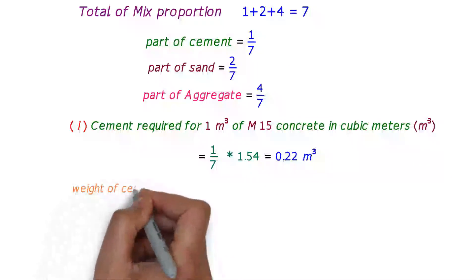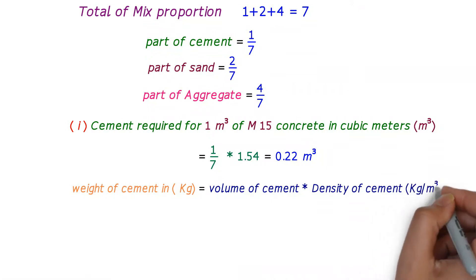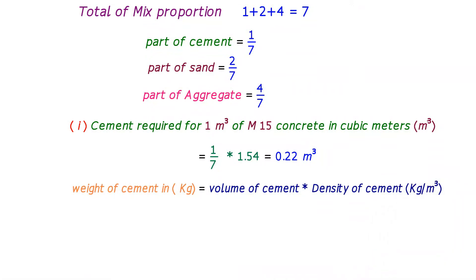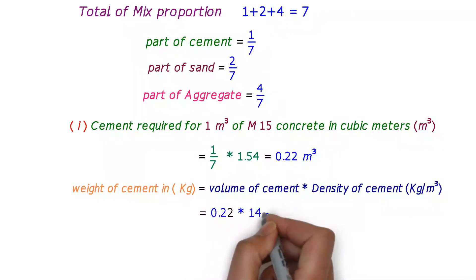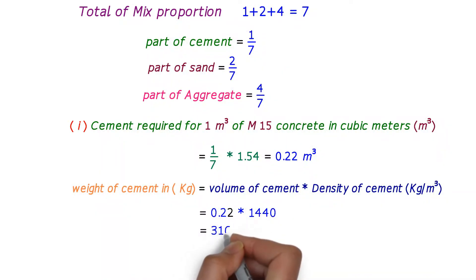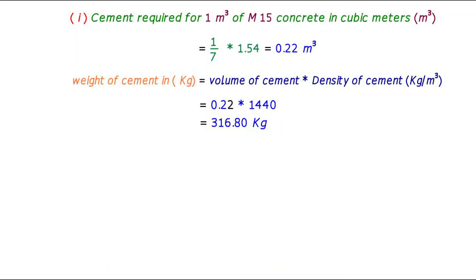The volume of cement is 0.22 cubic meters and the density of cement is 1440 kg per cubic meter. Multiplying these gives the weight of cement as 316.80 kg.